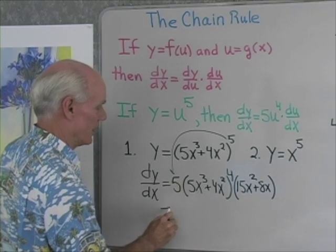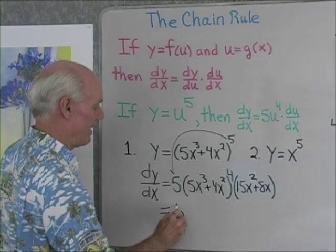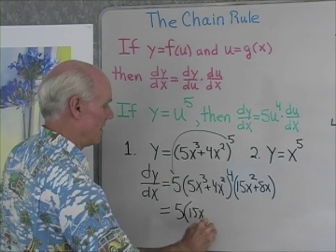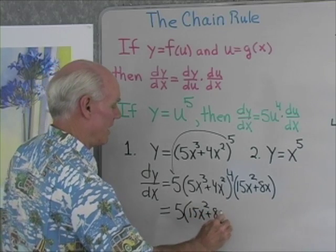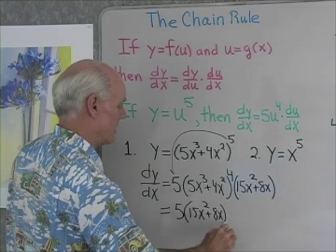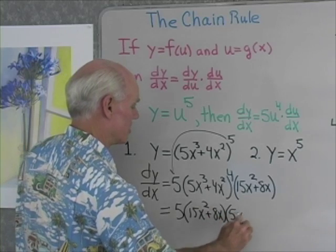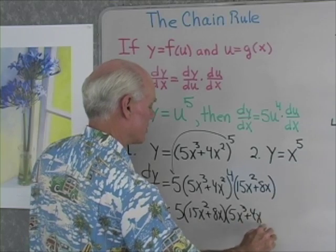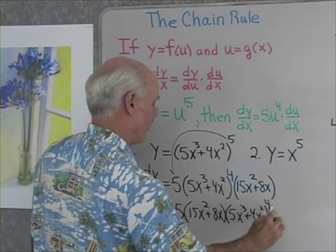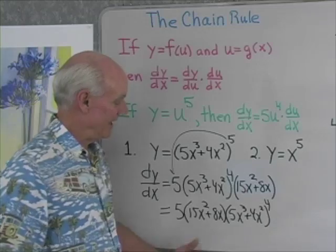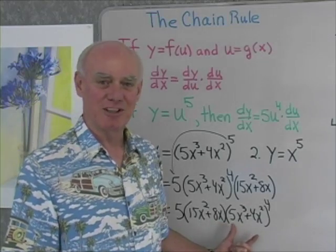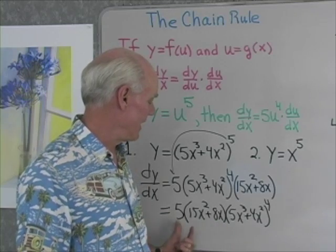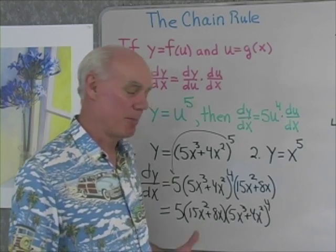So let's see what this looks like: 5 times (15x² + 8x) times (5x³ + 4x²) all to the fourth. You might look in the back of the book at this point to see what answer they have, to see if you need to factor an x out or anything like that.